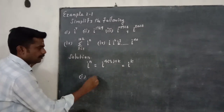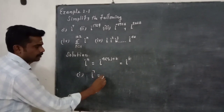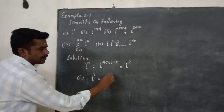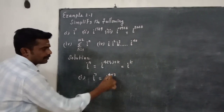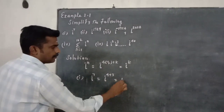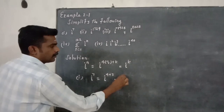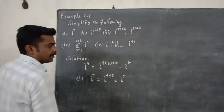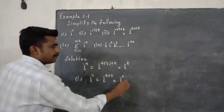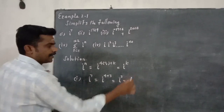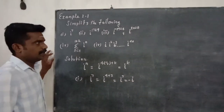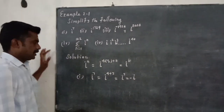First: i power 7 equals i power (4 plus 3) equals i power 3, and i power 3 equals negative i. That is the answer for the first one.